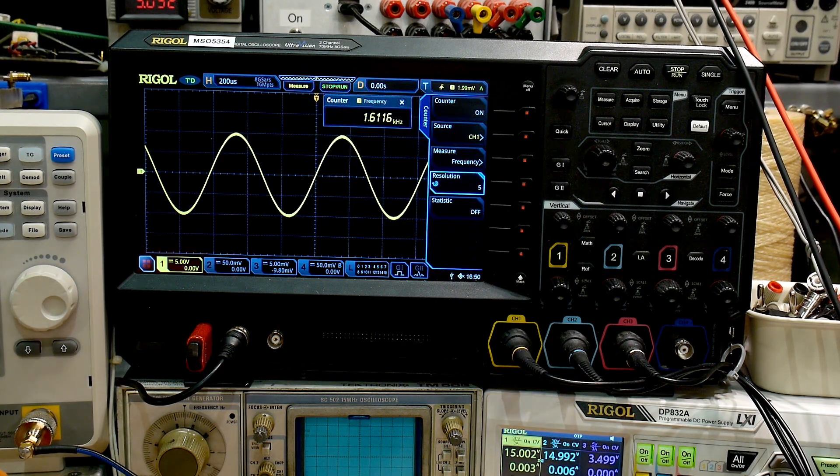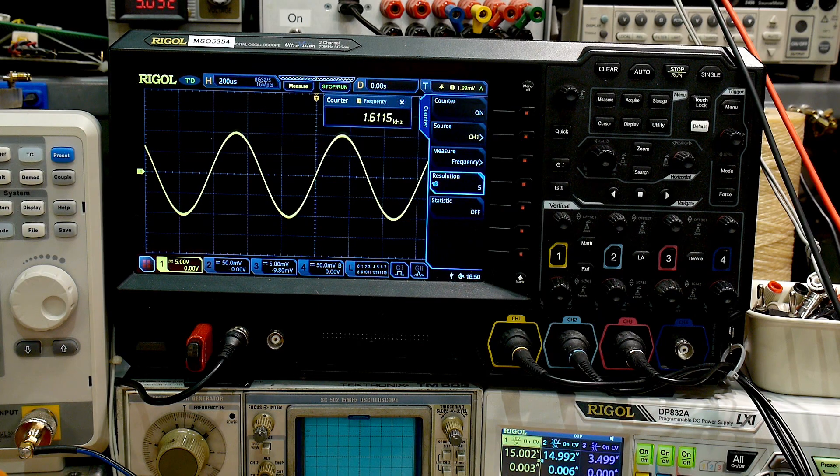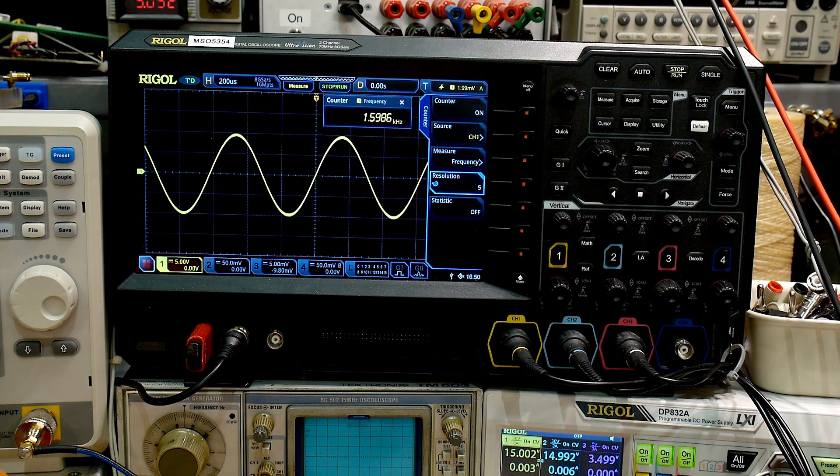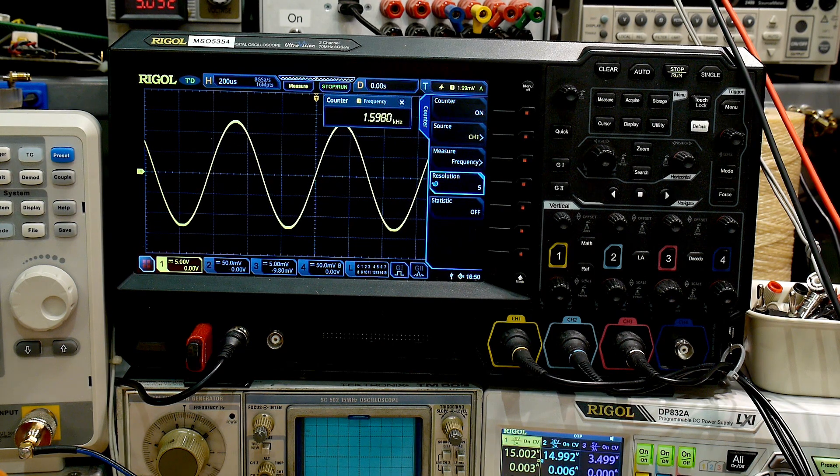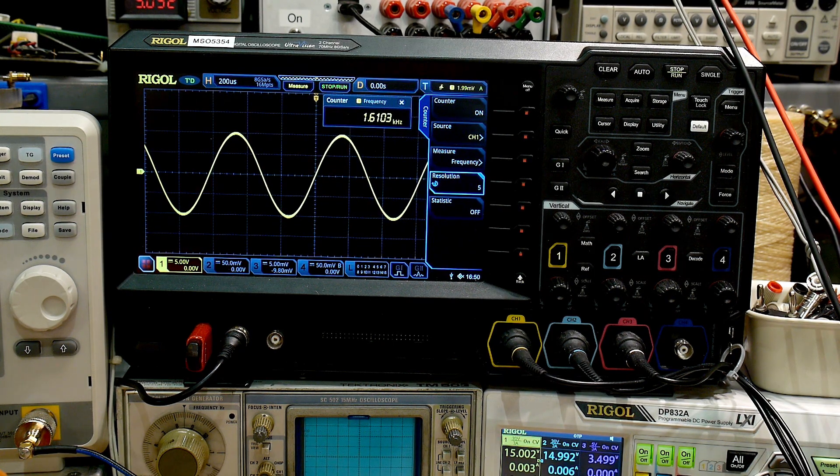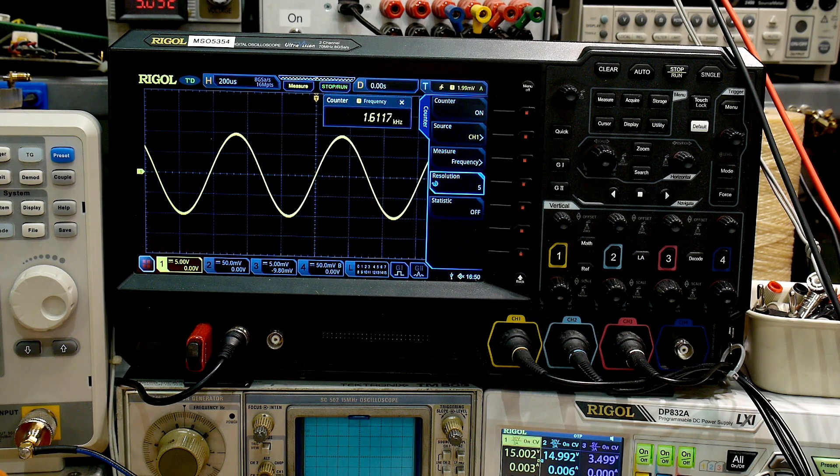And like I said, that one value, that 5.1 K, if I just put my finger on it, you can see that I could, I can change the, I can change the gain by putting my finger on it. What I'm doing is I'm effectively lowering that resistance. And by lowering that resistance, I'm increasing the gain of the stage.